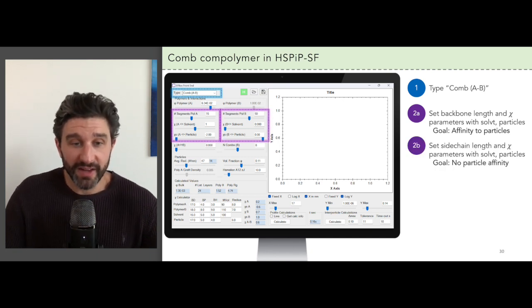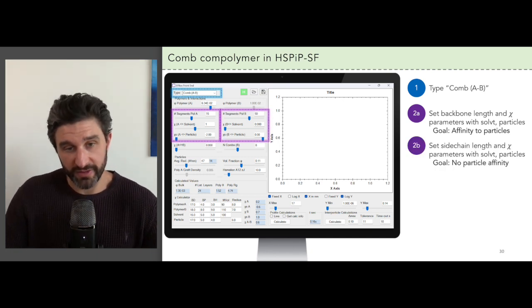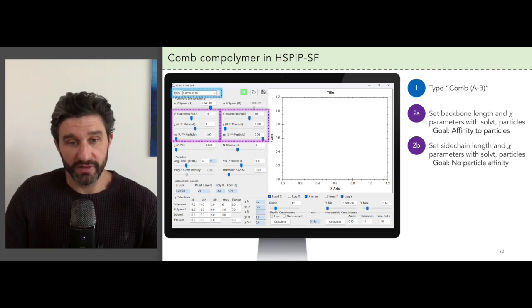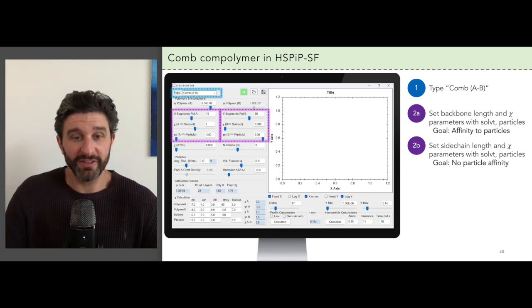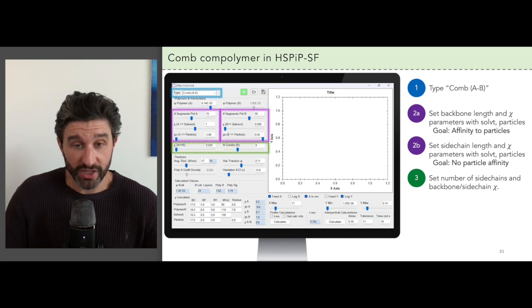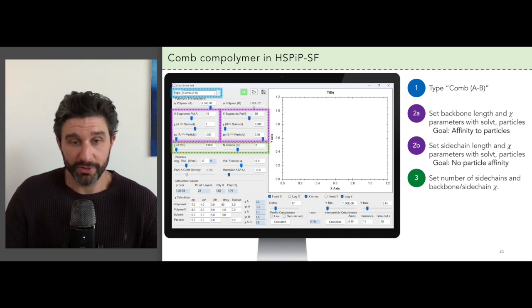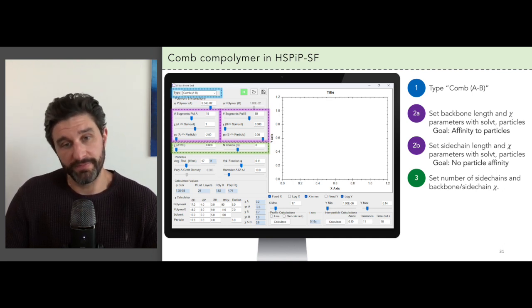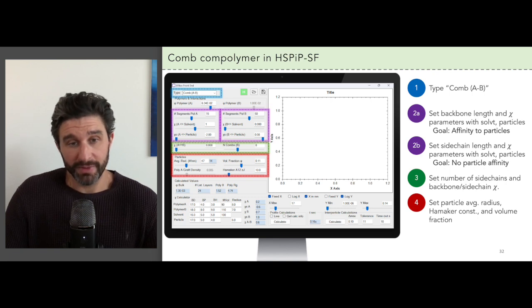We also need to set the side chain length and chi parameters. In this case, we want inert non-absorbing side chains, and so we set the particle chi parameter to zero for these chains. The last part with the polymer design is to set the number of side chains per comb and the chi parameter between the side chains and the backbones. And then finally, we set up the particle properties.